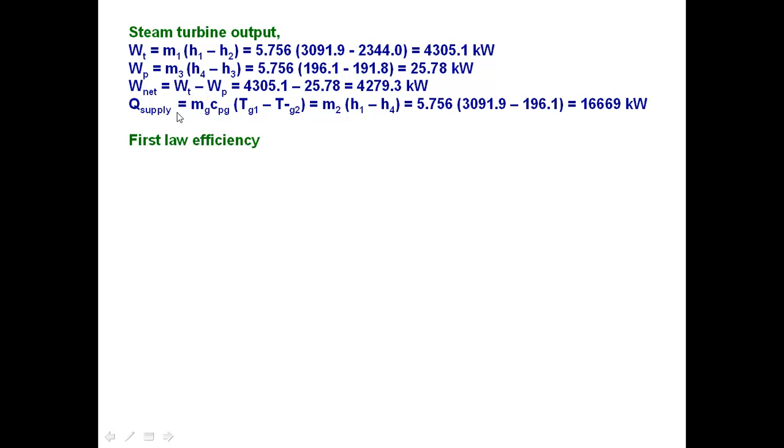The amount of heat supplied to the boiler, that is the heat recovery steam generator, is 16.669 megawatts. The first law efficiency can be calculated from the output by input, the output is net output from the steam turbine.